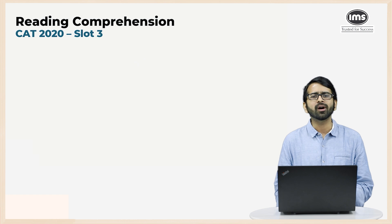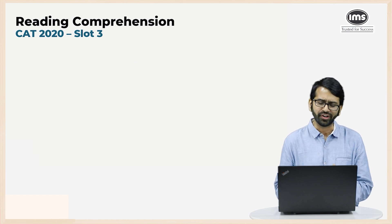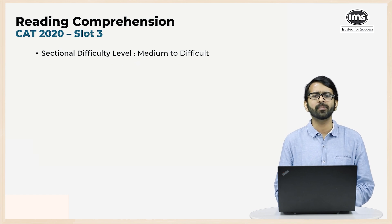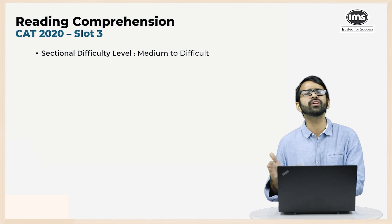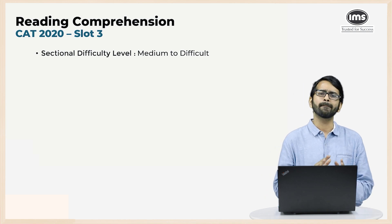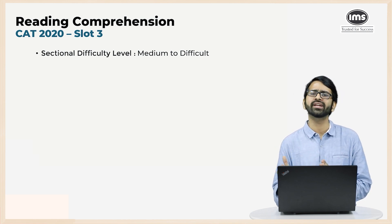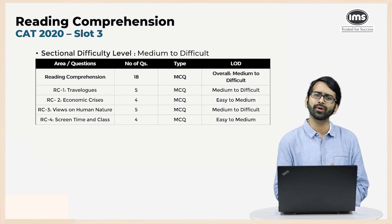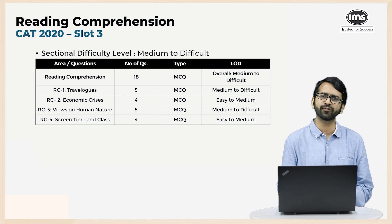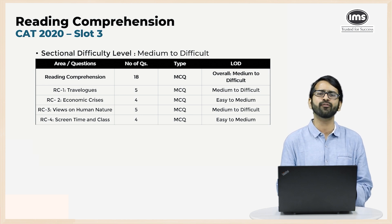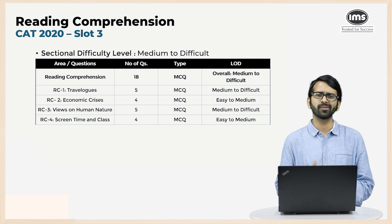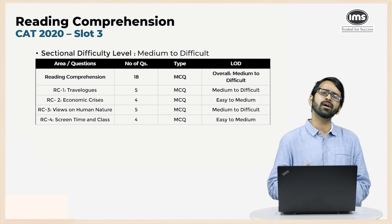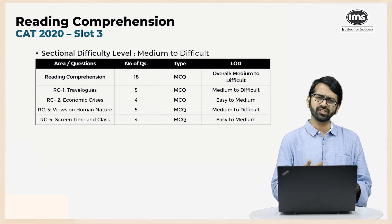Let's talk about individual sections. The difficulty level of the Reading Comprehensions this year was medium to difficult — the passages were slightly more difficult compared to previous years' CATs. There were four passages in total: two passages had five questions each and two had four questions each. A couple of passages were medium to difficult and a couple were easy to medium.